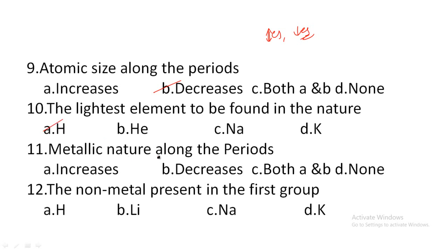Next: the metallic nature along the period. Along the period, on the leftmost side are S-block and D-block elements, which have maximum metals. The metallic nature decreases on the rightmost side.